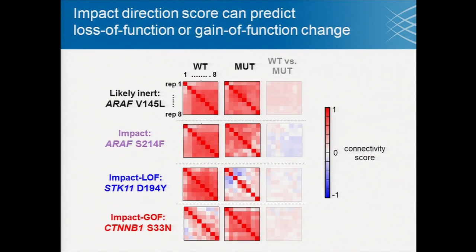There is one other feature we saw from comparing these gene expression signatures — a direct comparison between the wild type and mutant signatures. For STK11, introducing the wild type ORF gives very strong, consistent signatures, but introducing a mutant does not give as consistent signatures, suggesting loss of function. Conversely, with a beta-catenin mutation, the wild type gives some consistent signature, but the mutation actually increases the consistency of the gene expression signature.